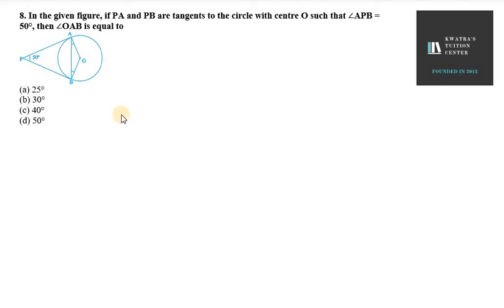Hello everyone, let's start with exercise 9.1 question number 8. In the given figure, if PA and PB are tangents to the circle with center O such that angle APB is 50 degrees, then we need to find angle AOB.